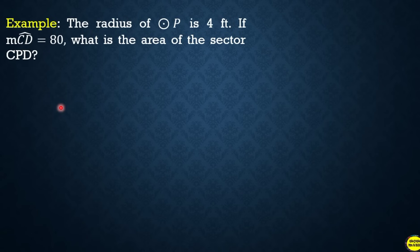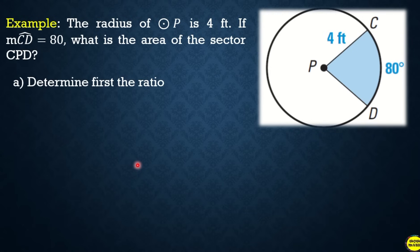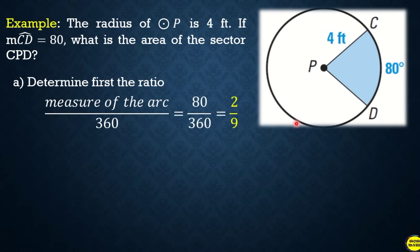For example: the radius of circle P is 4 feet. If the measure of arc CD is 80°, what is the area of sector CPD? First, determine the ratio: measure of the arc over 360, which is 80 over 360, equal to 2 over 9.